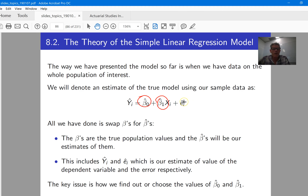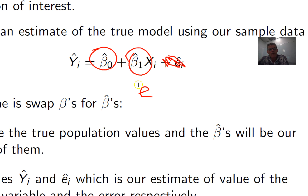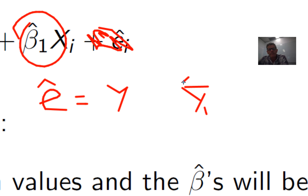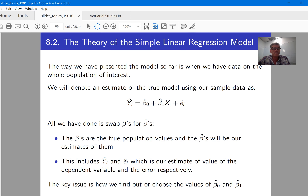And likewise, we have the predicted value of Y given by the model — Y hat. The error for a given value would be given as the true value of Y minus the predicted value of Y. So there's a relationship between those two, and we'll see that a little bit more later.